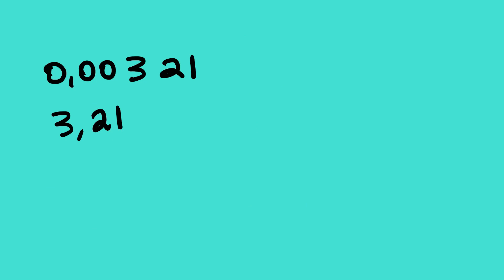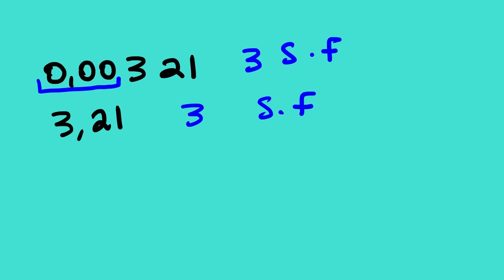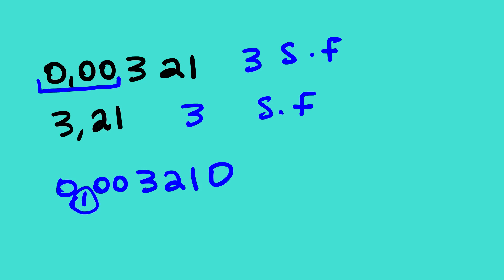For example, 0.00321 and 3.21 have the very same number of significant figures, because if there is a decimal point and the number starts with zeros we do not count them — so both have three significant figures. But if we have 0.003210, since we have a decimal point and a zero at the end, we count it as a significant figure too, giving us four significant figures. That's it for this lesson. This is Wahula SJ — thank you very much.